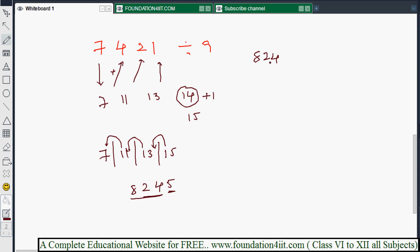Apply the balancing rule: 5, then 1 plus 3 is 4, then 1 plus 1 is 2, then 1 plus 7 is 8. So we get 824 as the quotient and 5 as the remainder when dividing 7421 by 9. This is the way we can do division with 9. Now let's see division with 99.